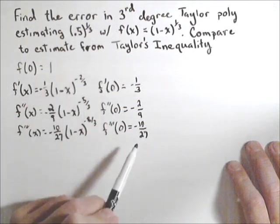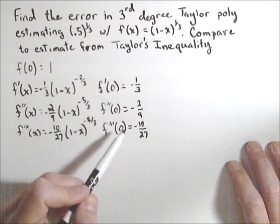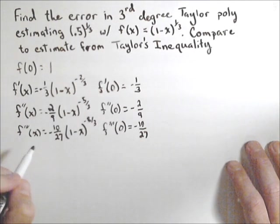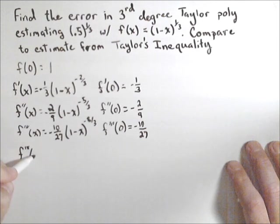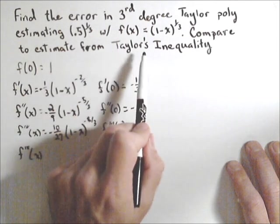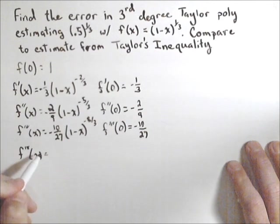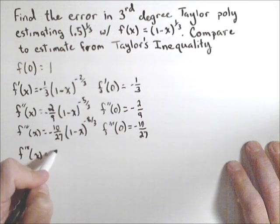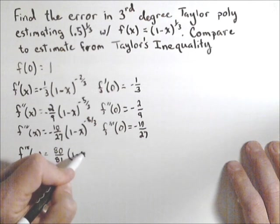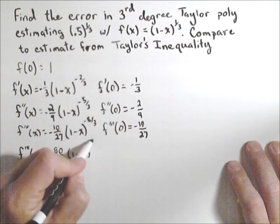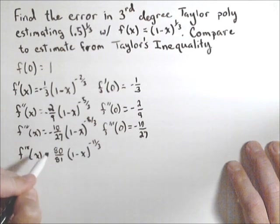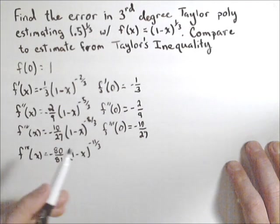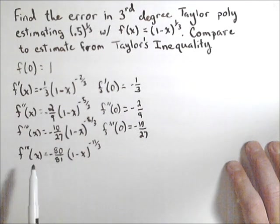So we have the derivatives at zero that will make our coefficients. Let's go ahead and find the fourth derivative because we're going to need to maximize that for our Taylor's inequality. So since we're already taking the derivatives, let's just get that done. -8/3 times -10/27 is 80/81 times (1-x)^(-11/3), and again by chain rule, makes that negative. Now we'll talk about that one in a second.